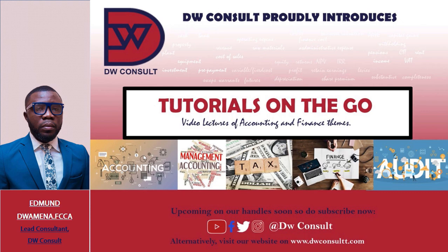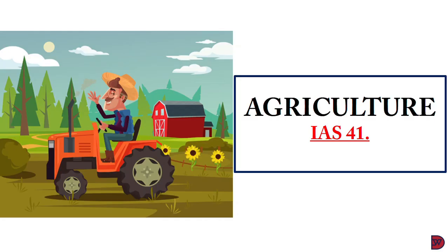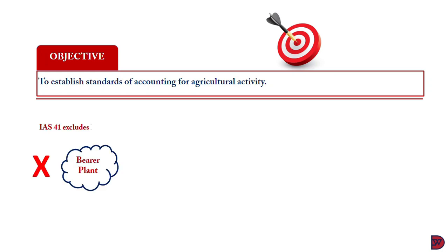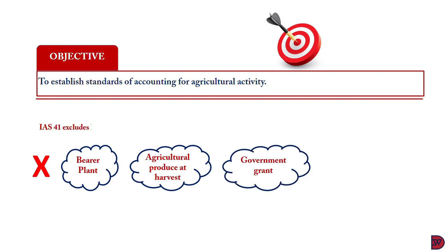Now, to this episode's lecture: Agriculture, IAS 41. The objective of IAS 41 is to establish standards of accounting for agricultural activity. IAS 41 excludes bearer plants, agricultural produce at the point of harvest, government grants, and intangible assets.